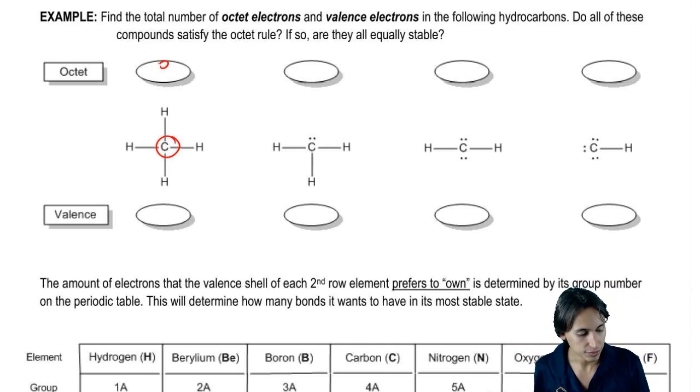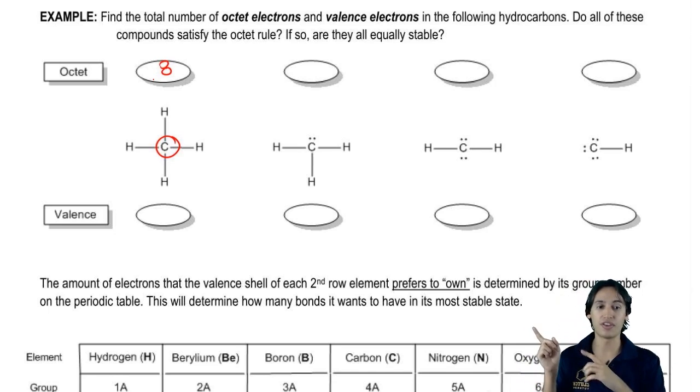Eight. So let's write that in. Now what I want you guys to do is look at the next one and say, okay, well, how many octet electrons does that one have? So let's move to the right and what you're going to find there is that you also have eight.